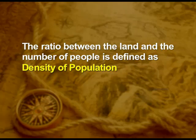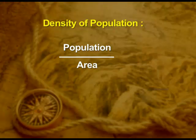Land has the potential to provide us with all our needs. However, it has limited capacity to support people living on it. Hence, it is necessary to understand the ratio between the number of people to the size of land. The ratio between the land and the number of people is defined as density of population — the number of people living per square kilometer, expressed as population divided by area.